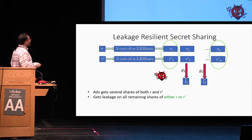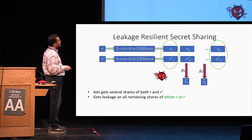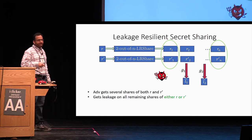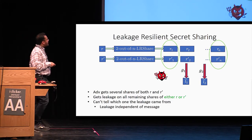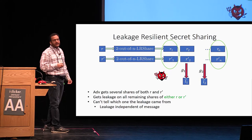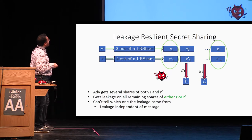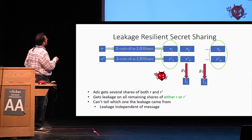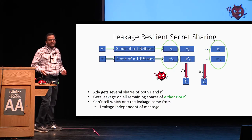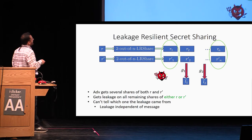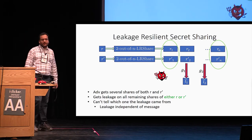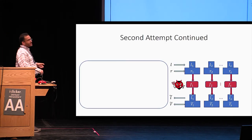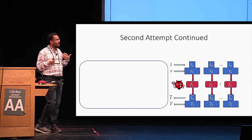The adversary also gets leakage on all the remaining shares of either R or R prime. The guarantee is that the adversary cannot tell which message the leakage is coming from — cannot distinguish leakage on R from leakage on R prime. This in particular means the leakage is actually independent of the underlying message.